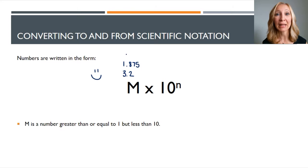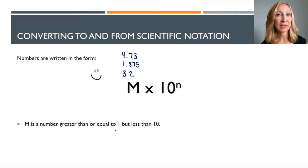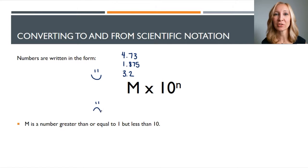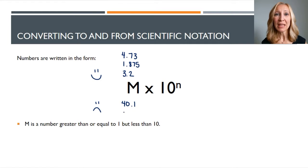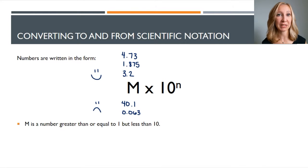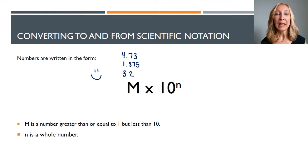So you could use three point two, one point eight, seven point five, or four point seven three — these are all acceptable values for m. Things you couldn't use: forty point one, point zero zero, or point zero six three — these are numbers that are not greater than or equal to one and less than ten.